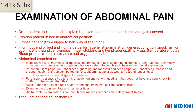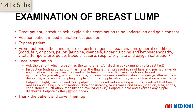Check for rebound tenderness; if a mass is present, note its size, shape, and consistency. On percussion, percuss all quadrants starting with the painless quadrant and leaving the painful quadrant last. Check for shifting dullness or fluid thrill. Auscultate for bowel sound quality and quantity, and listen over the renal artery for a bruit. Examine the groin, genitals, and hernia orifices, and perform a rectal examination checking for anal tone, blood, masses, and prostate enlargement in males.